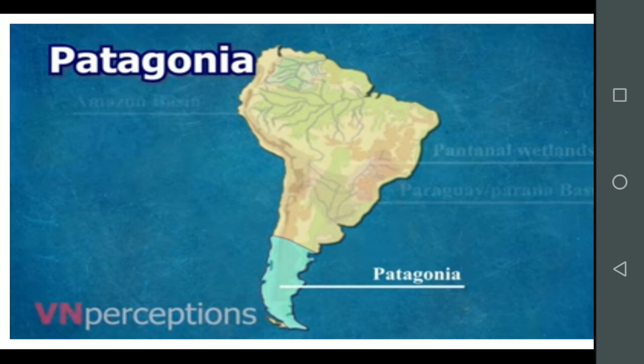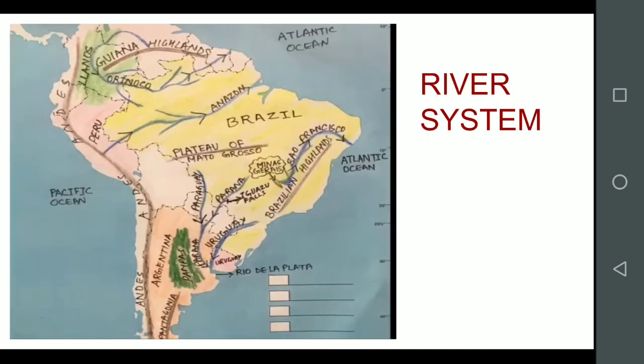This was all about the four physical divisions of South America. Moving on to the river system of South America. The Orinoco River, which is 2,400 km long, flows from the Guiana highlands towards the Atlantic Ocean in Venezuela. The Amazon river, which is 6,400 km long, rises in the Andes mountains and flows eastwards across the widest part of the continent. It is fed by thousands of tributaries and by daily heavy equatorial showers.